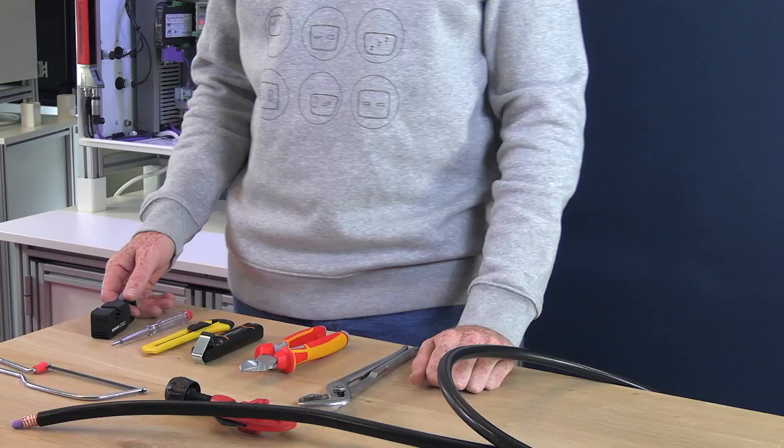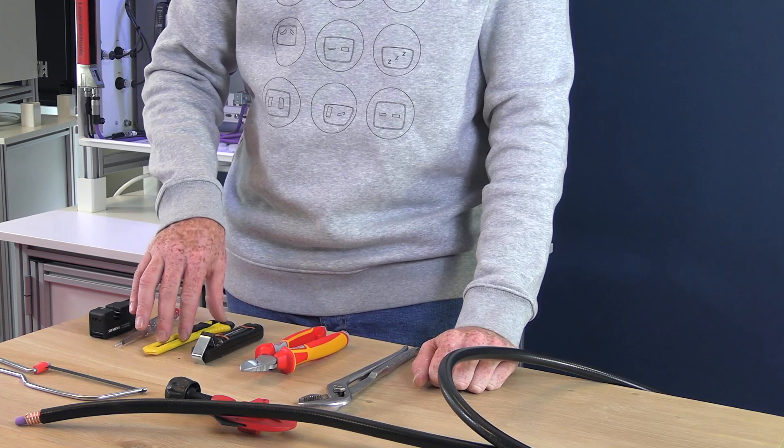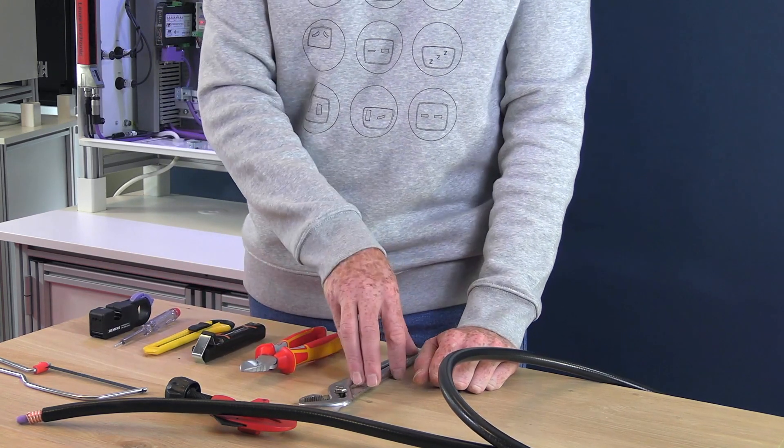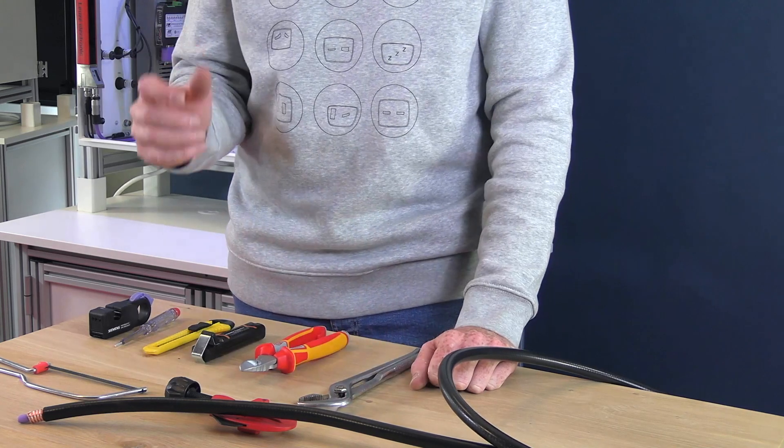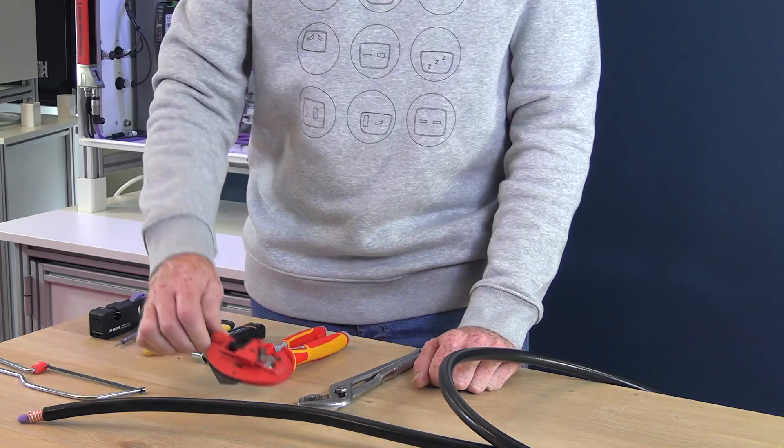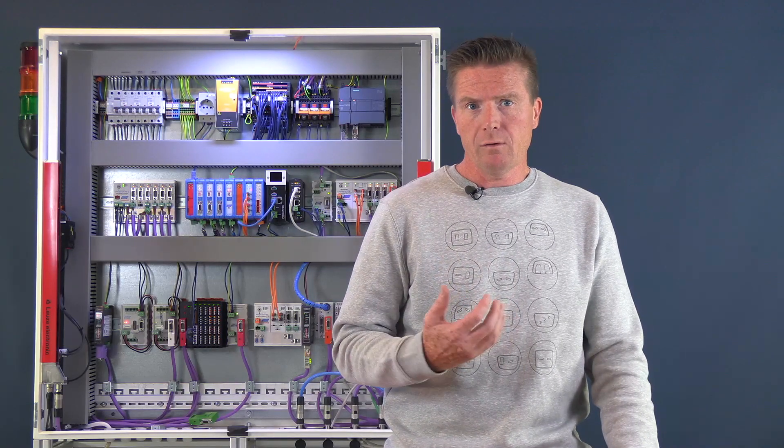To do this we need some tools. Let's start with a Profibus strip tool. I've got a small flat screwdriver, a standing knife, a strip tool, a cutter, a tool to connect the gland, an iron saw, and a pipe cutter. So I need those tools to connect my cable into the cabinet.